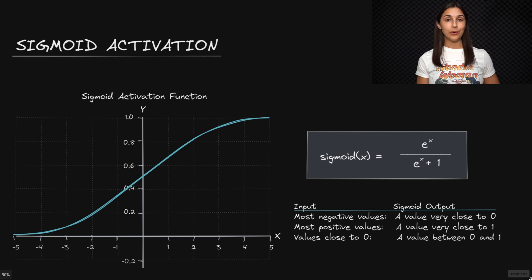In an artificial neural network, an activation function applies a nonlinear transformation to the output of a given layer.